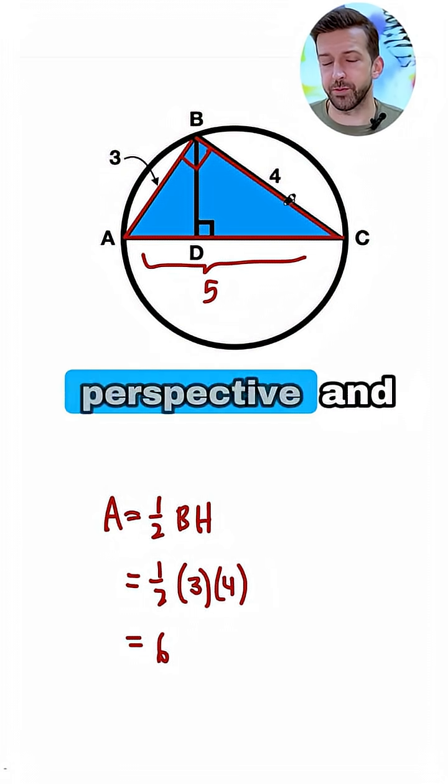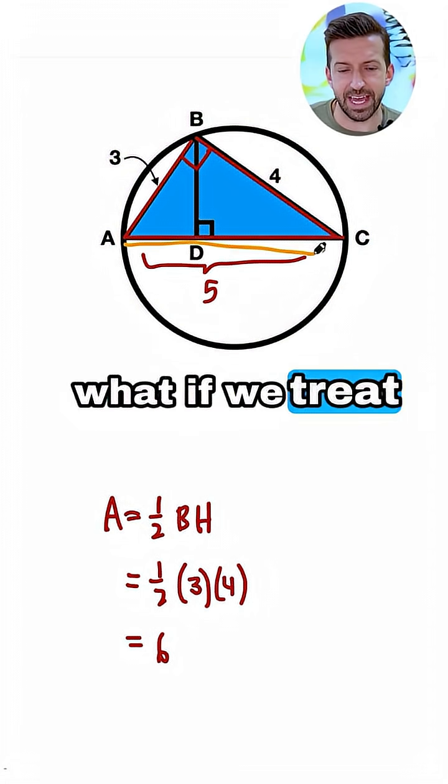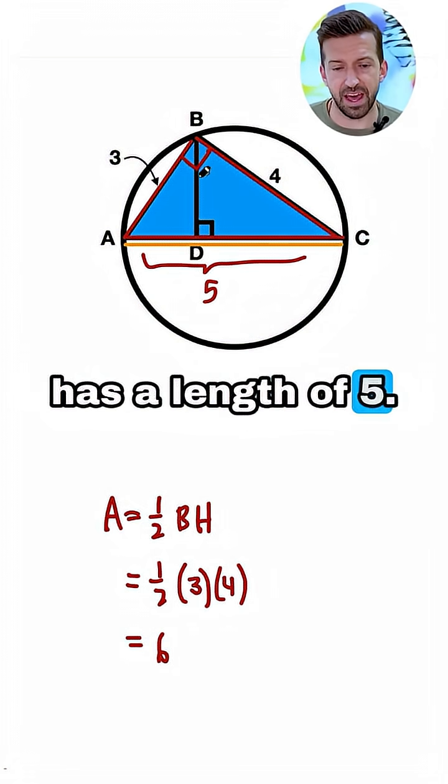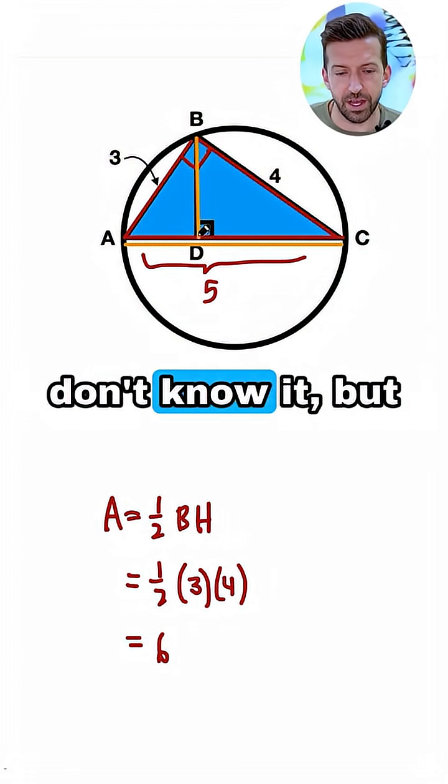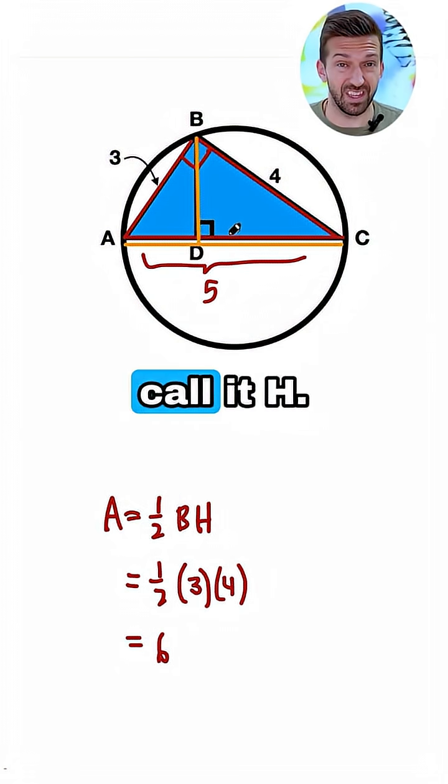Now let's shift our perspective and say, what if we treat AC as our base? That has a length of 5. And BD, well, we don't know it, but that could be our height, so we'll call it H.